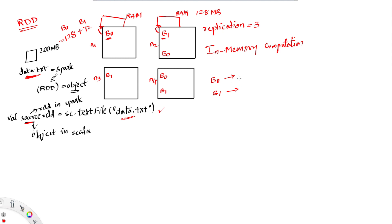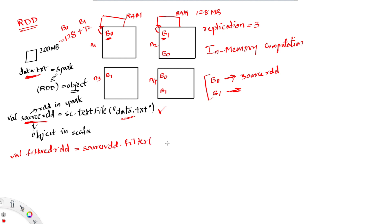Spark creates this lineage and calls it sourceRDD. When we execute this line, Spark will not do anything on top of the data — it will just create this lineage. In the next step, if we want to do a transformation such as filtering the data, we call it filteredRDD. We apply a lambda function inside a filter call on sourceRDD, and Spark will create another lineage entry linking filteredRDD back to sourceRDD.